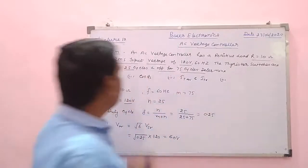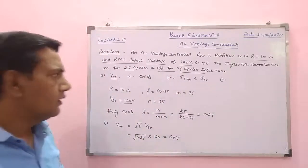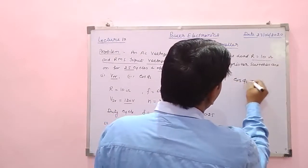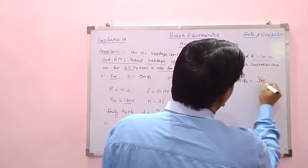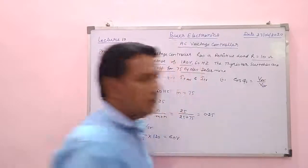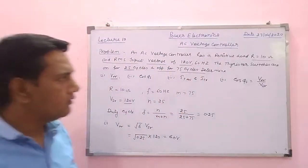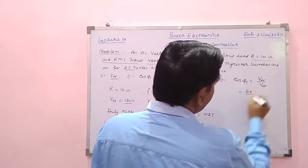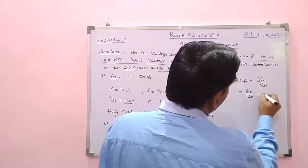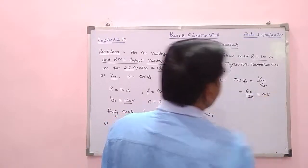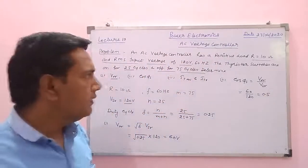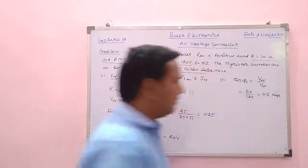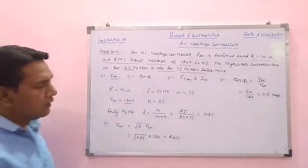In the second part, we find the supply power factor. Using the formula cos(phi_S) equals V_naught_R divided by V_SR with lossless switching devices: cos(phi_S) equals 60 divided by 120 equals 0.5 lagging.